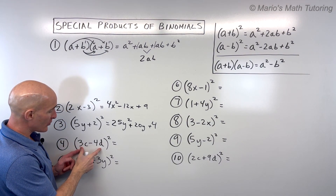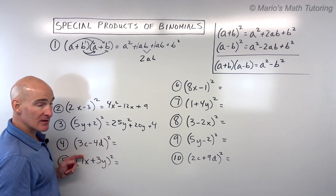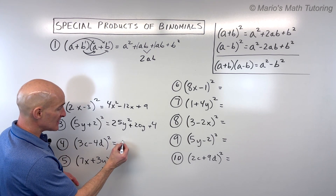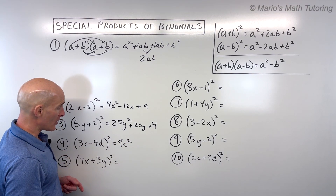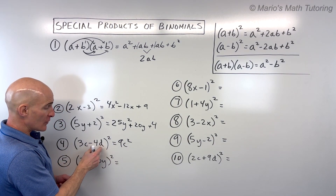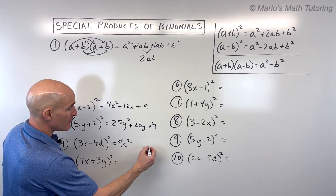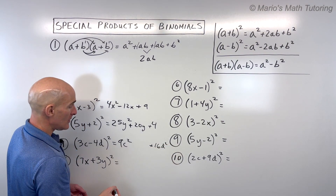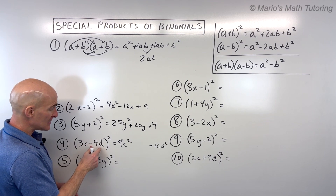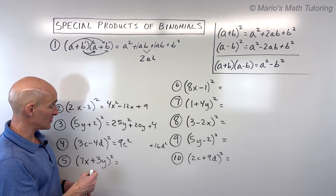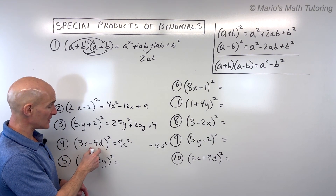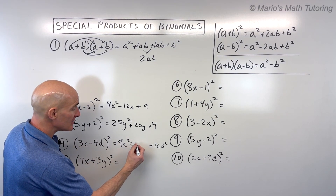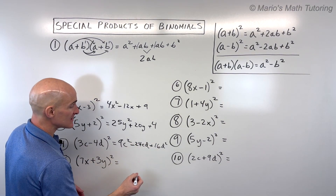For number four, the quantity 3c minus 4d, squared: 3c times 3c is 9c squared. Negative 4d times negative 4d is positive 16d squared. Then a times b times 2: 3c times negative 4d is negative 12cd, doubled is negative 24cd.